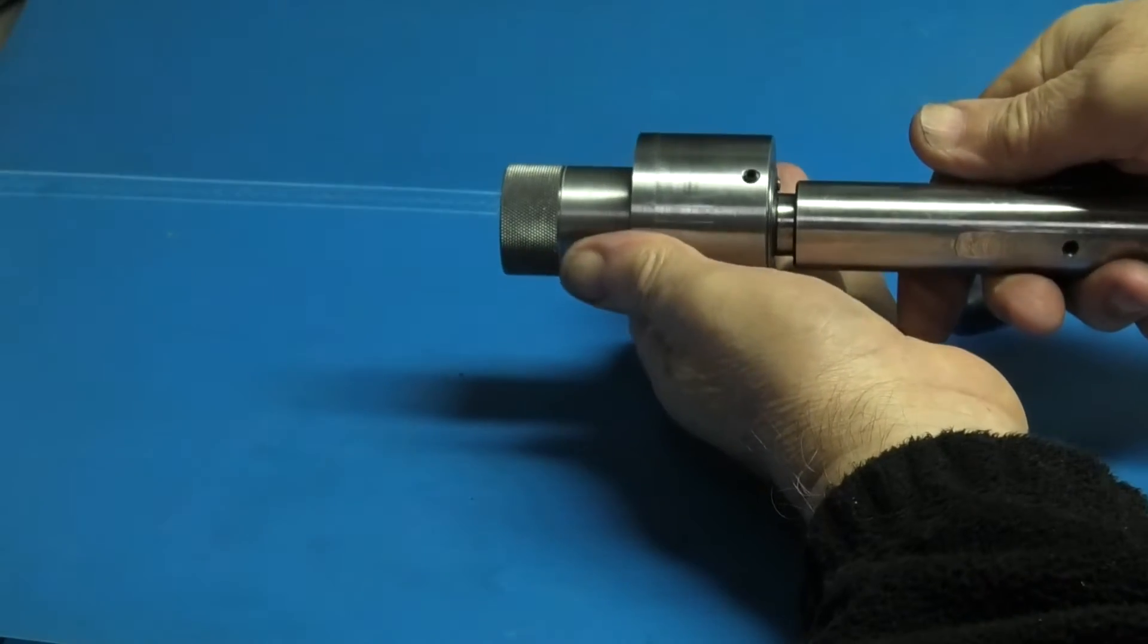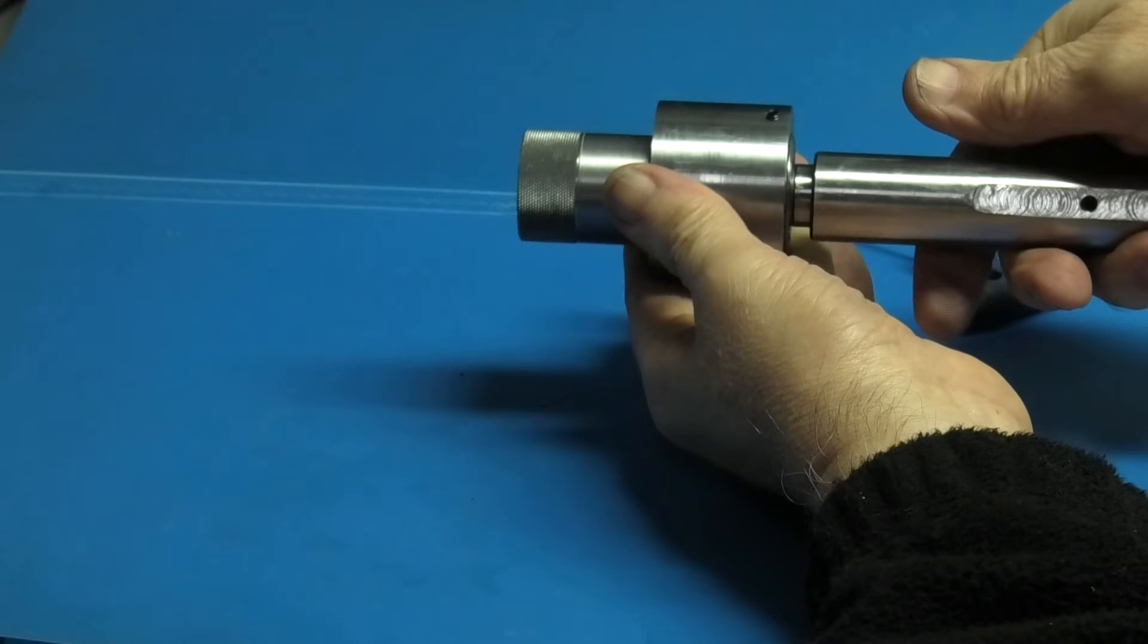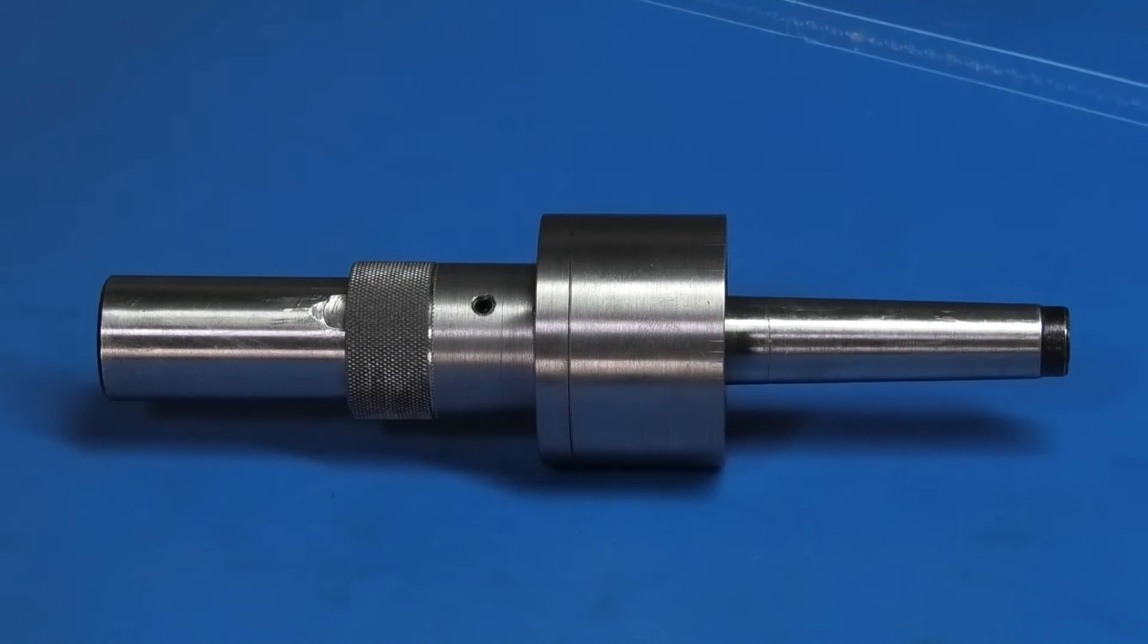That's all assembled. I just need to take the Morse taper off that end and fit it on the other end. That's the finished assembly with the Morse taper on the correct end. I'll take it over to the lathe to test it.